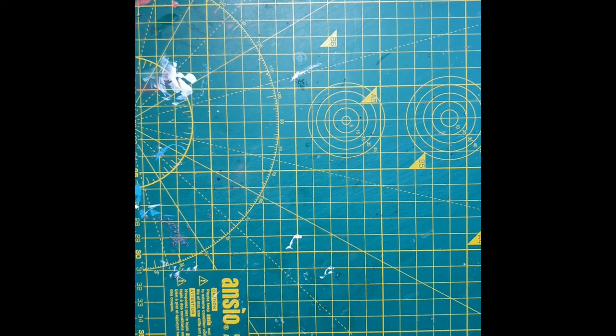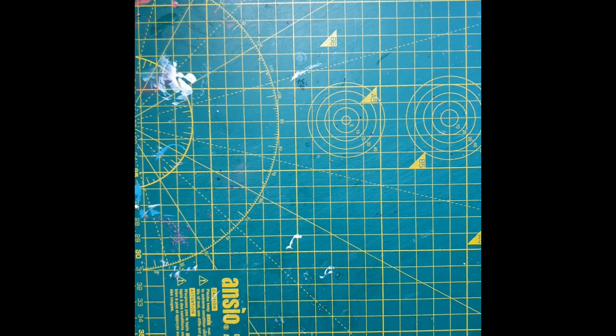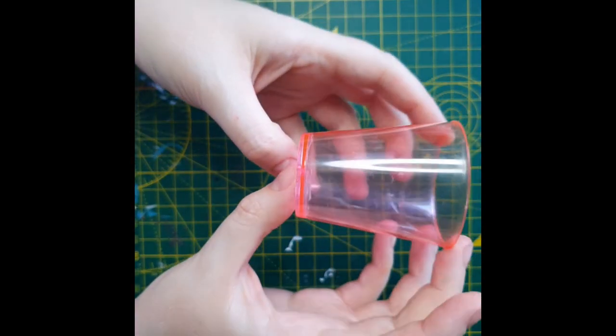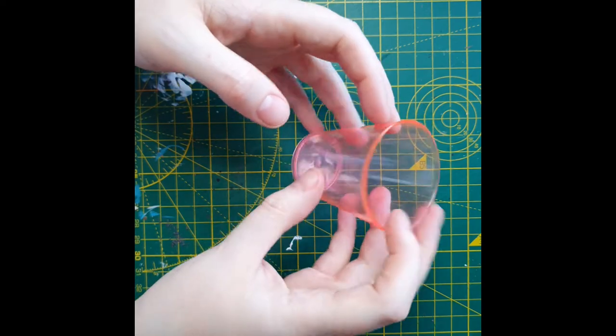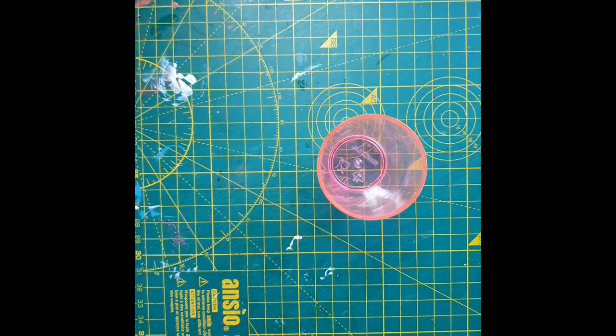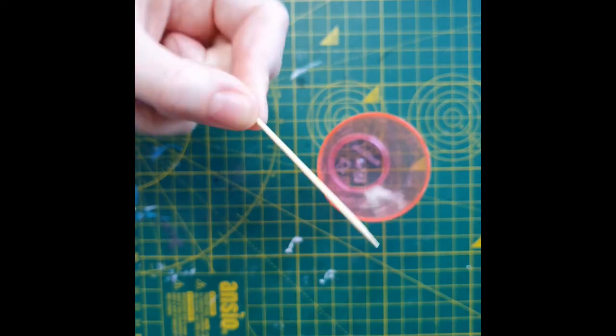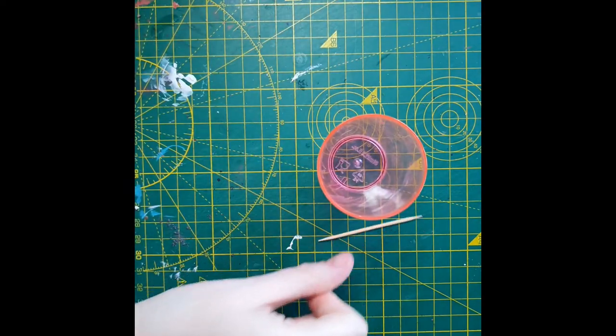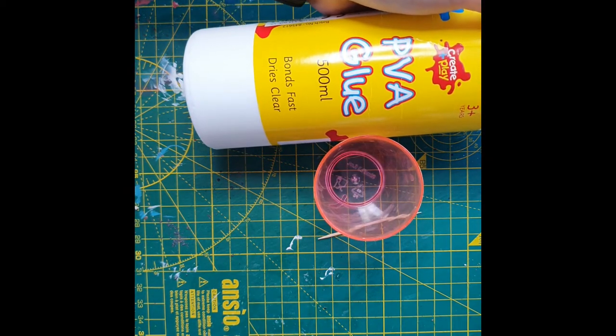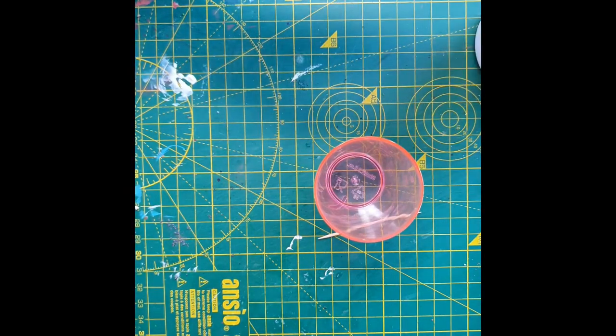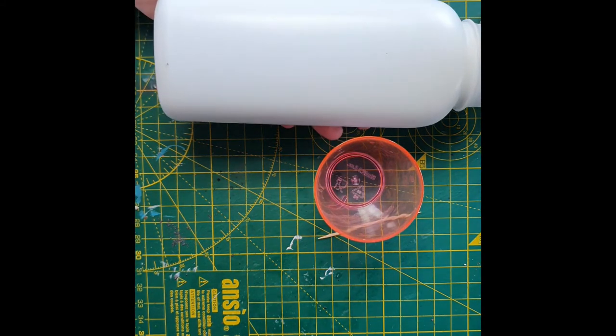So the first thing you're going to need is a small container in which you're going to mix your snow, and I've chosen to use just a little plastic shot glass. I think you get these from the pound shop. The second thing you're going to need is a toothpick for doing your mixing and application. You're going to need some good old-fashioned PVA glue and finally you're going to need some talc.